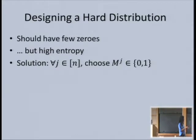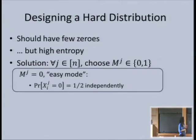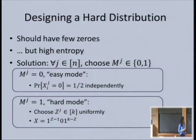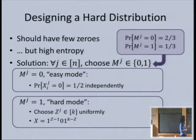The key is to not use a product distribution. The distribution goes like this: coordinates are independent. For every coordinate, we choose a mode, which is binary. If the mode is 'easy,' every player chooses their input independently—probability one-half it's zero, one-half it's one. This is the high-entropy but many-zeros mode. The other mode is 'hard'—low entropy but few zeros: we choose one random player who gets zero and everyone else gets one. Here the entropy is just log k, but we have very few zeros. From the combination of these two modes, we get a hard distribution. The mode is chosen with a slightly unbalanced distribution—two-thirds versus one-third—for technical reasons we'll see shortly.